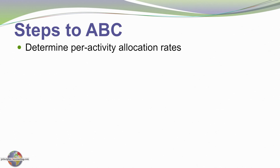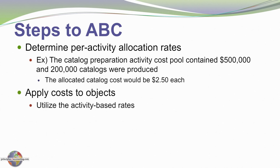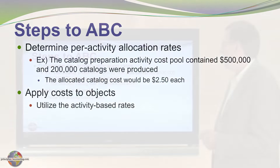The next step is to determine the per-activity allocation rate. For example, if the cost pool for catalog preparation includes $500,000 and 200,000 catalogs were produced, we would come up with a cost of $2.50 per catalog. We then apply those costs to cost objects in a very logical fashion, utilizing that activity allocation rate we just calculated.